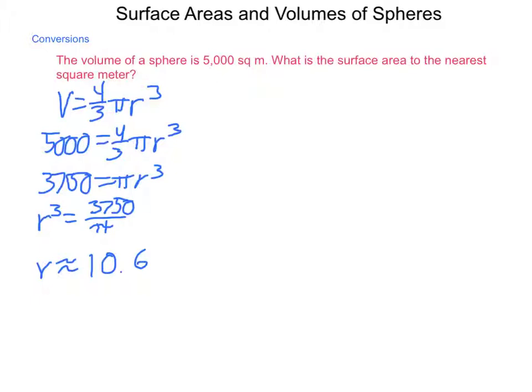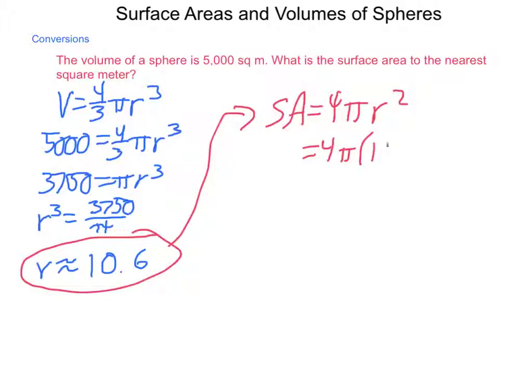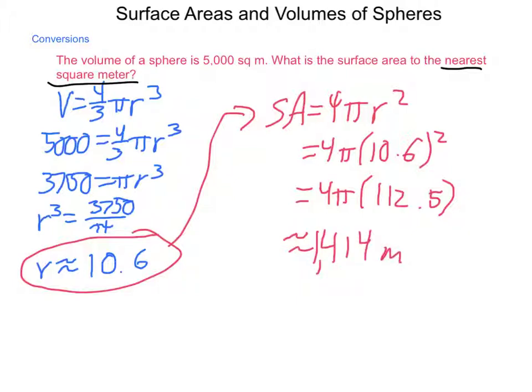Now, we can take this value here and go and find our surface area. Surface area is calculated as 4 pi r squared. So, our surface area is going to be 4 pi times that 10.6 value squared. Doing the computations, you can store that value into your calculator. When you square it, you get 4 pi times 112.5. Multiplying this through, because we are to round it to the nearest square meter, we get approximately the value of 1,414 meters squared.